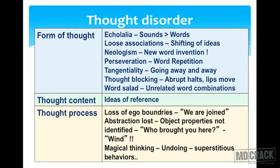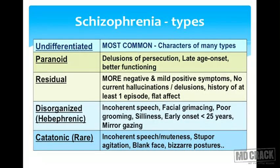In thought process disorder, there is loss of ego boundaries — for example, the patient says 'you and me are joined.' Abstraction is also lost: asked who brought them here, a patient might say 'the wind.' The patient may also display magical thinking, acts of undoing, and superstitious behavior due to impaired thought processing.